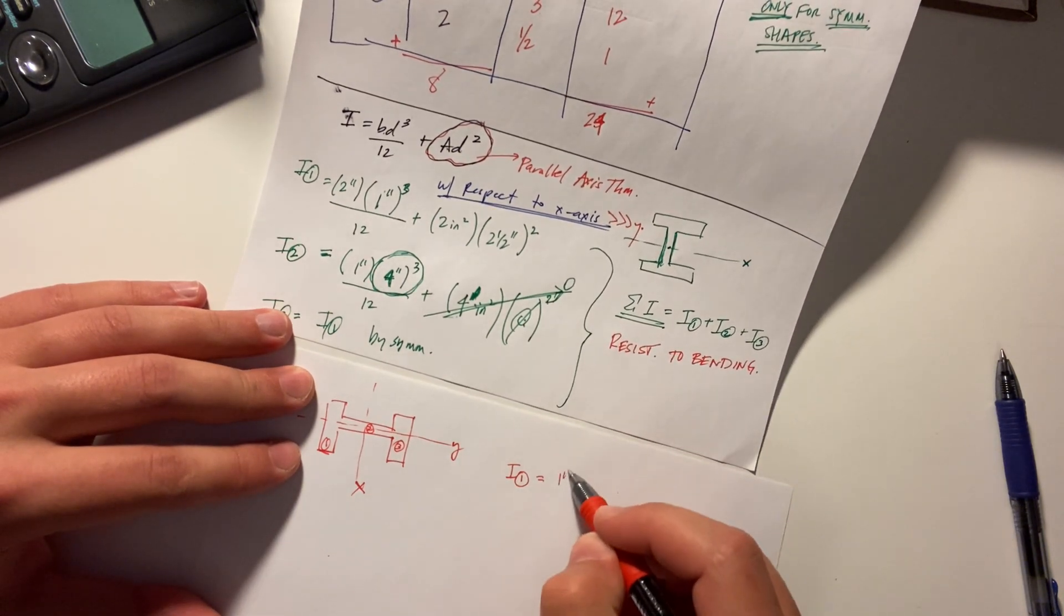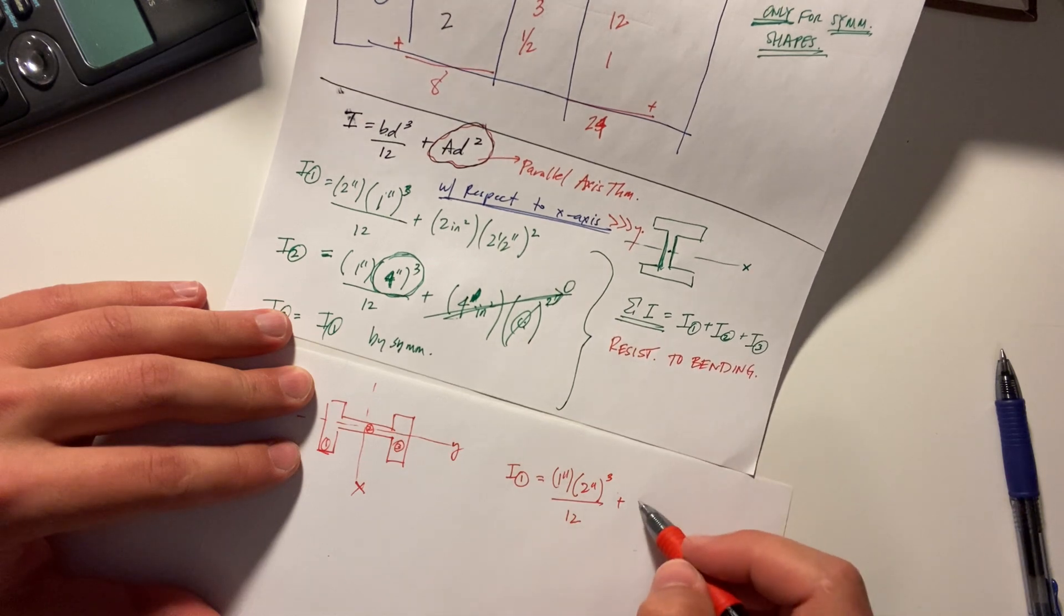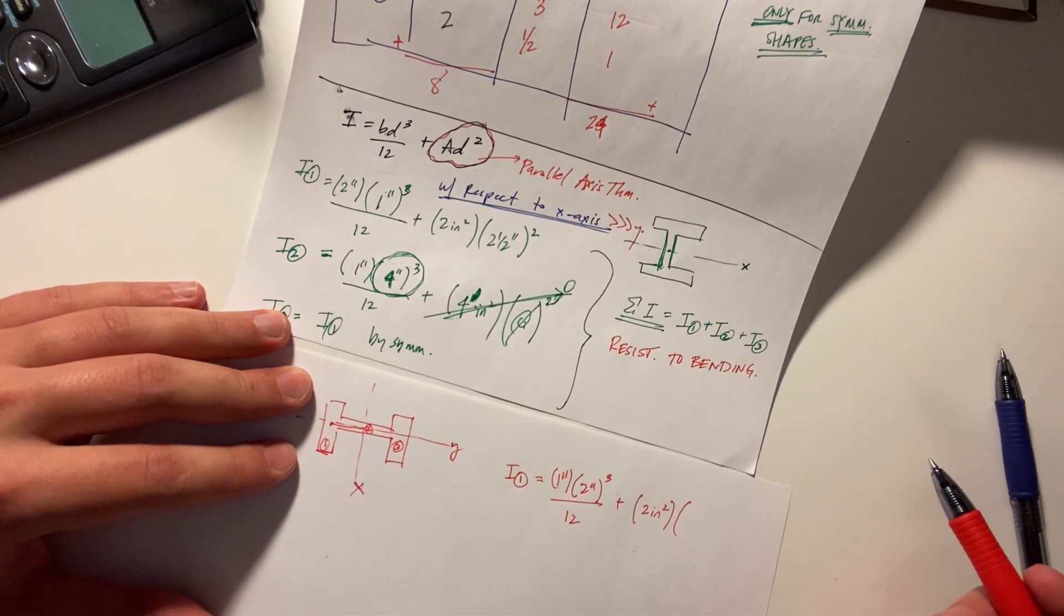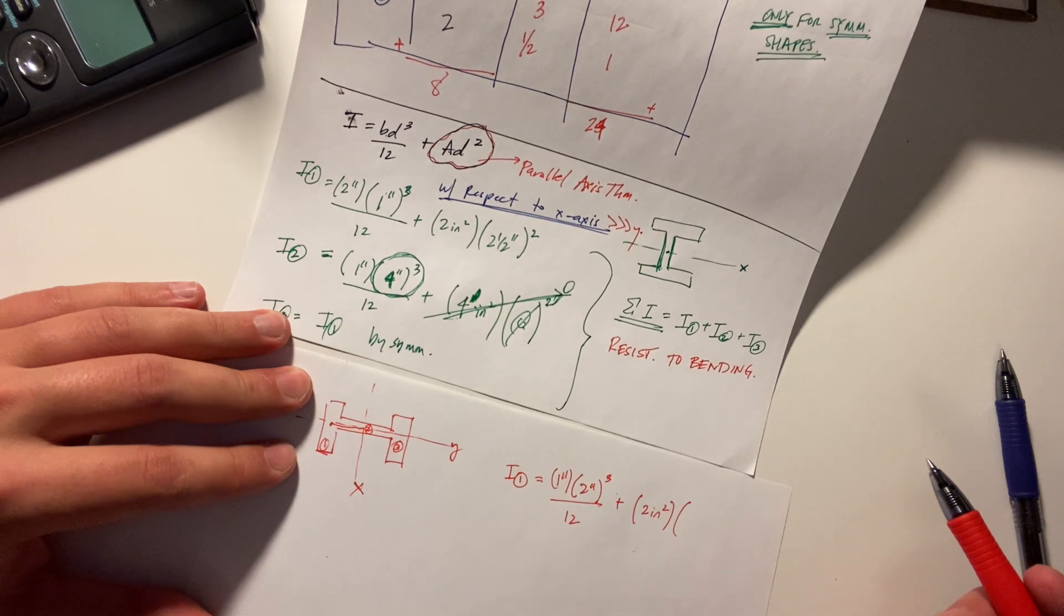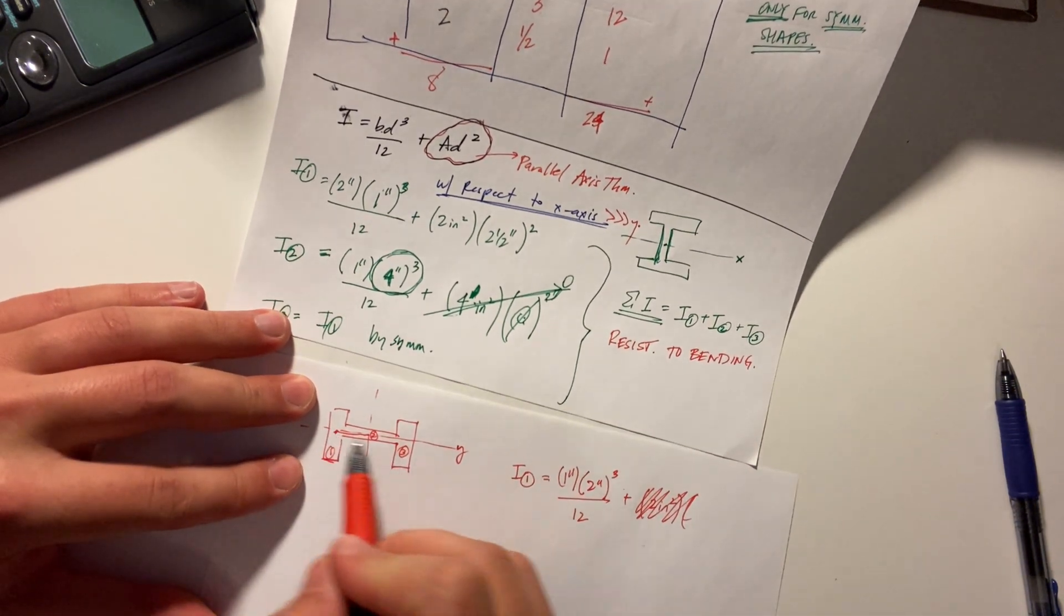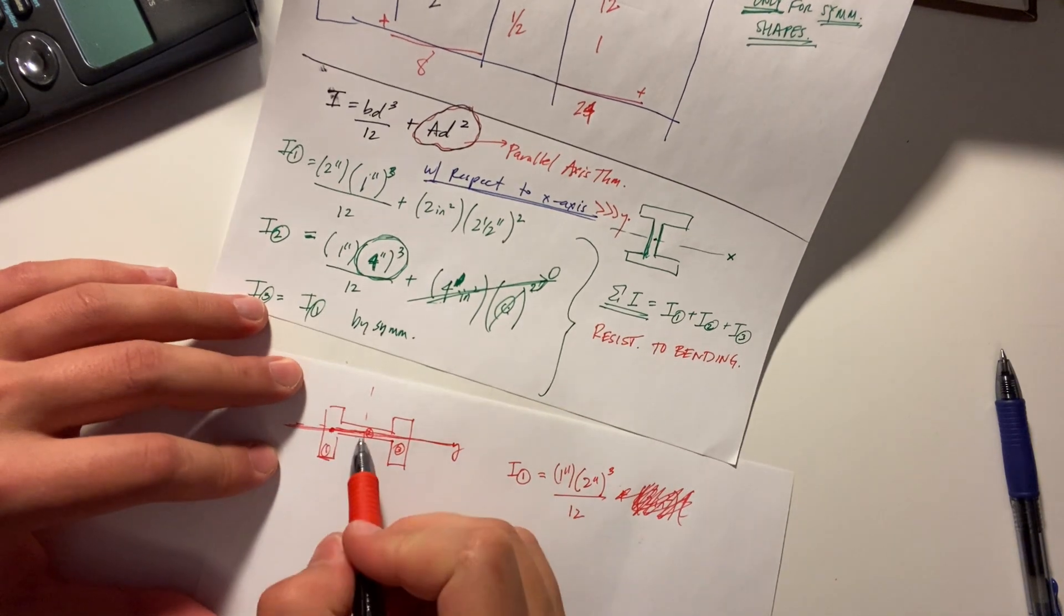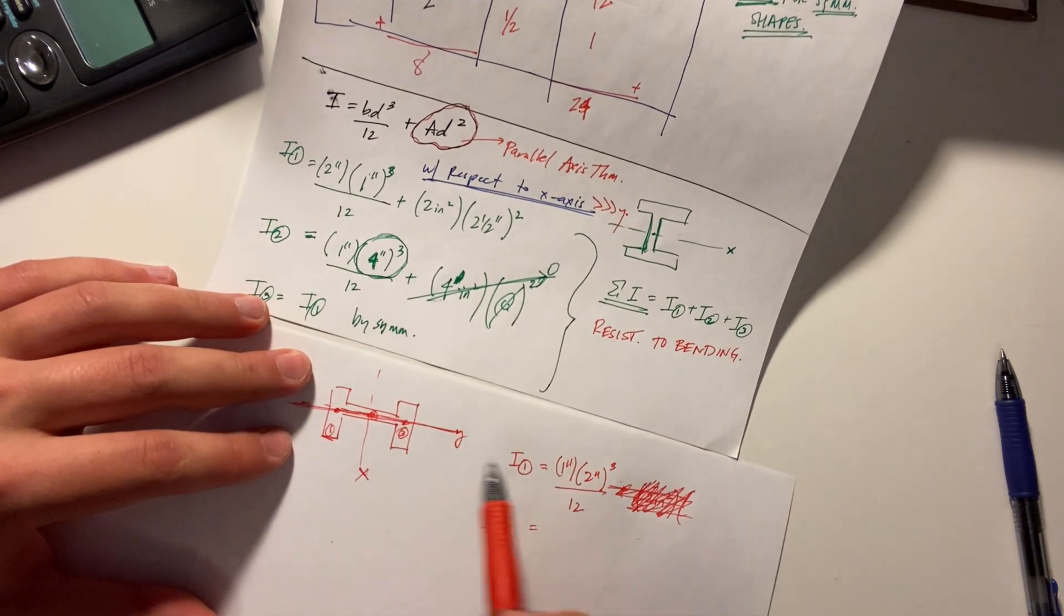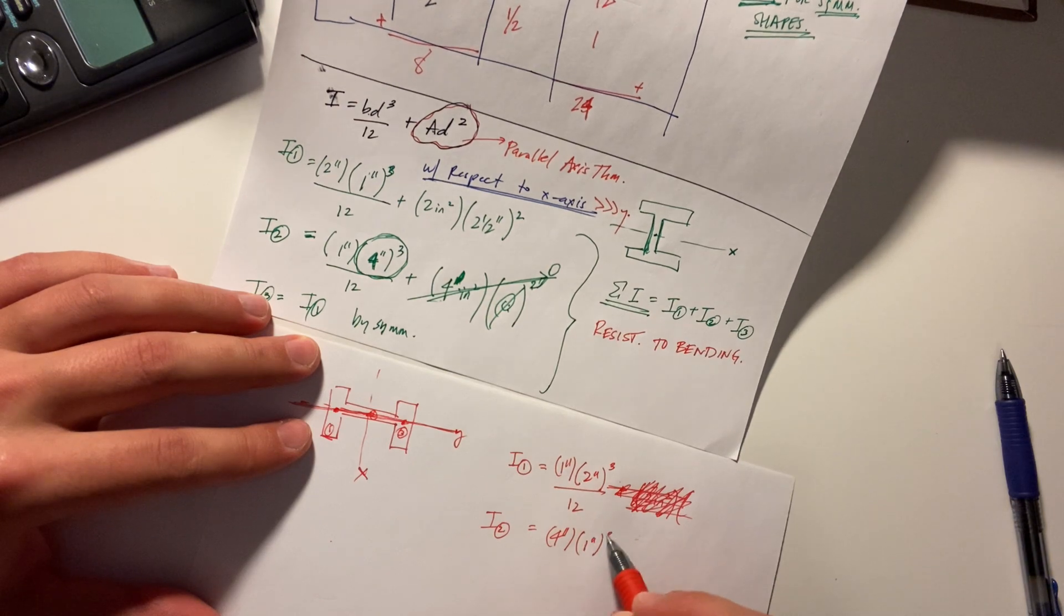Your b your d is an inch your d is 2 inches cubed over 12 plus your area still 2 inches squared your d is from here to here which we said is well no sorry that would be to the x-axis we were we want to be about the y right so if you're about the y that one there is no parallel axis because there's you're not moving anywhere you go here same thing you go here same thing so there's no parallel axis you're just left with